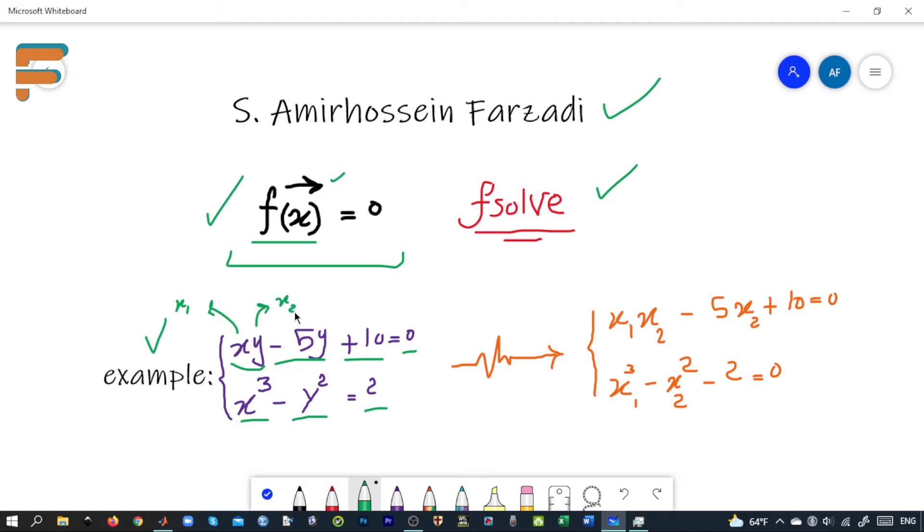We rewrite these equations. We will have x1 times x2 minus 5 times x2 plus 10 equals zero, and x1 cubed minus x2 squared. We can move 2 to the left-hand side and change its sign, making both right-hand side expressions equal to zero.